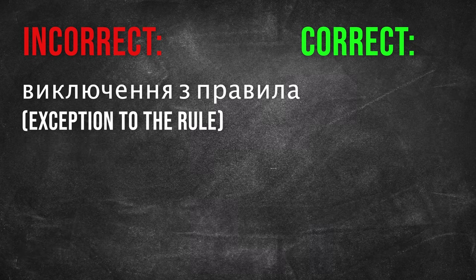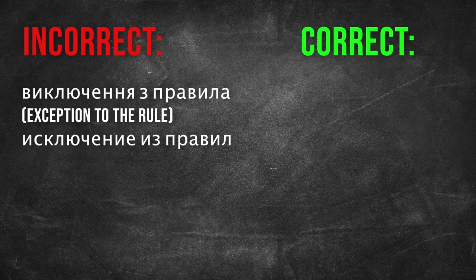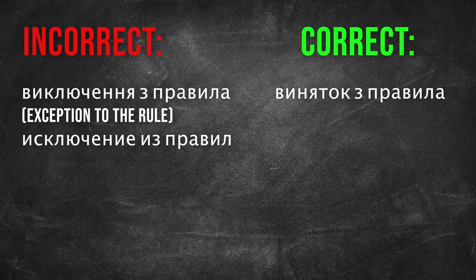Another example: «Виключення з правила» — in Russian it sounds like «Исключение из правил». But it is correct to say in Ukrainian «Виняток з правила». «Це виняток з правила.»